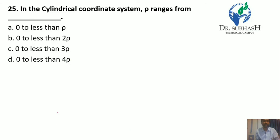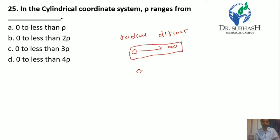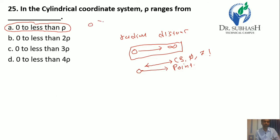Question 25: In the cylindrical coordinate system, the rho range is from — rho is the radial distance, which always starts from zero and extends to infinity. So the range is 0 to infinity.